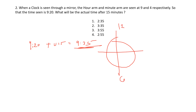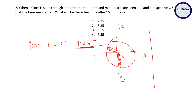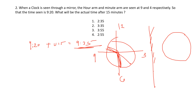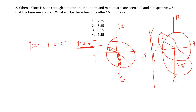Consider a clock with 12, 6, 9, and 3. If the actual time is 9:35, what will be the mirror image? On a clock in a mirror, 12 and 6 stay the same, but 3 and 9 switch sides. So the mirrored time reads 2:35. Therefore, 2:35 is the correct answer.